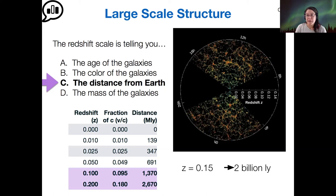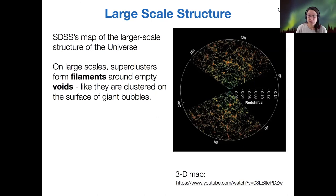For a sense of scale, you can assume that the radius of this circle is about a 2 billion light year radius. Some of the things to notice on this redshift map is how the galaxies are distributed. We see clumps of galaxies that form these filament structures around these empty voids.